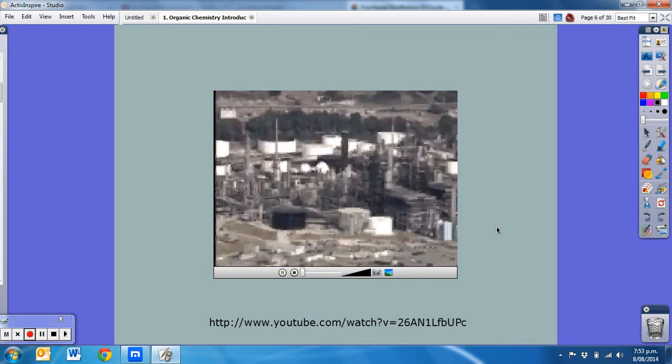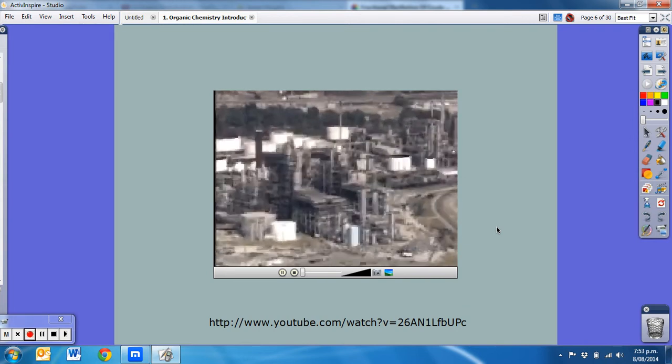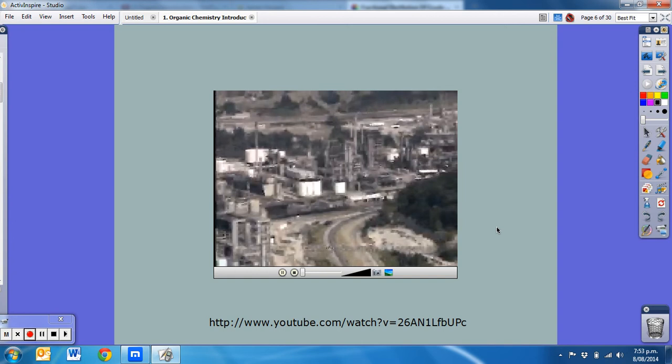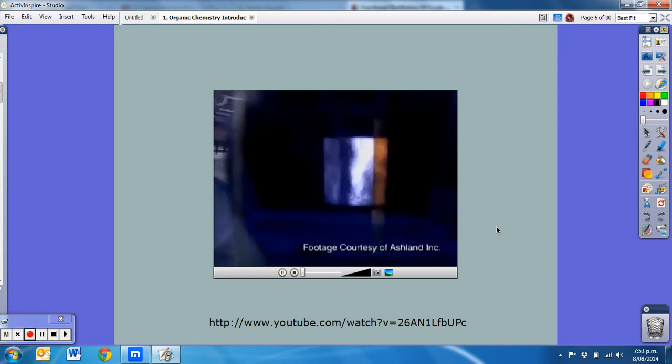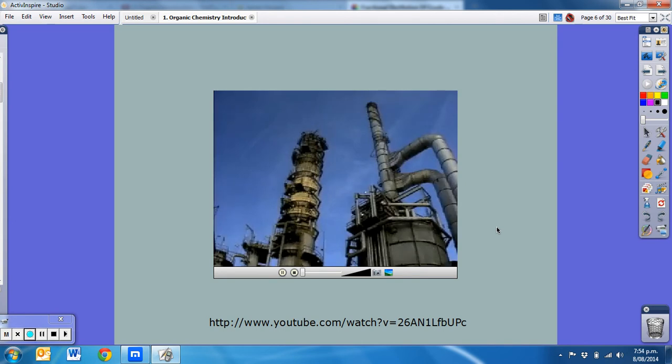These hydrocarbons are separated using a process called fractional distillation. The crude oil is heated in a furnace and fed into a large heated tower. The tower consists of many levels where repeated condensation and vaporization occurs as the hydrocarbons rise through the tower.